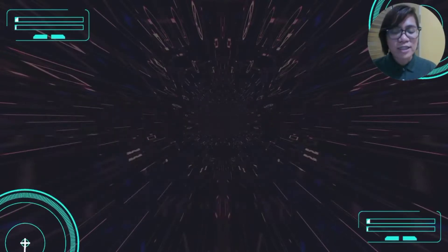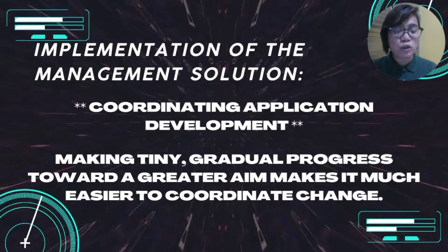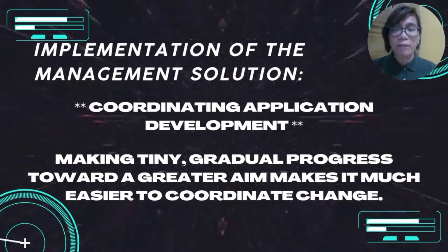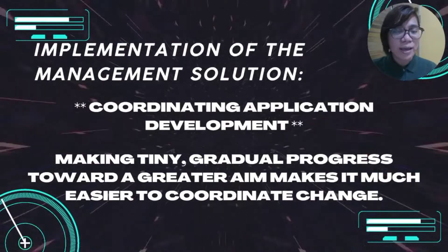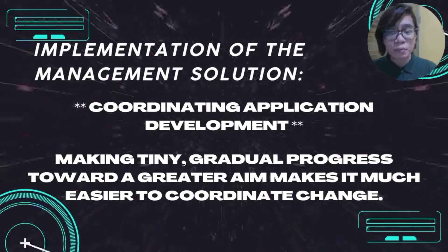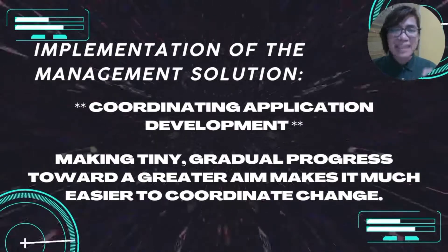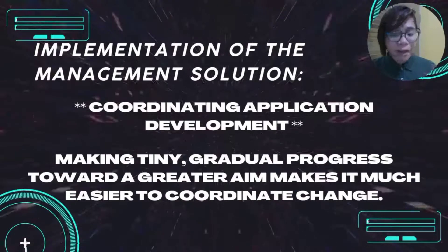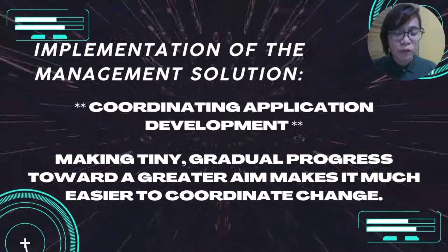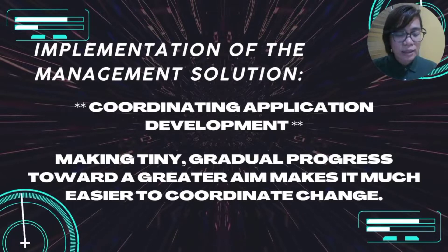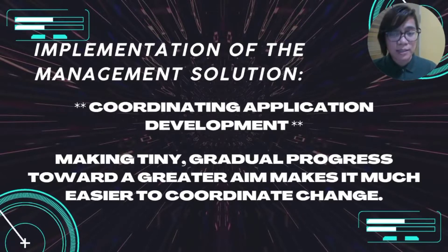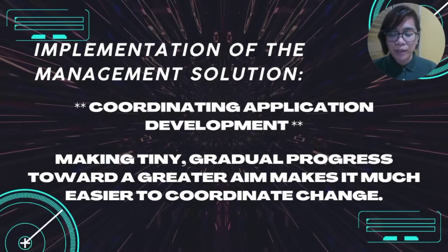The choice of change strategy is crucial for the issue of coordinating application development. Globally, there is too much complexity to try to implement a grand design strategy of transformation. Making tiny, gradual progress toward a great aim makes it much easier to coordinate change. Consider a five-year action plan as opposed to a two-year action plan, and to cut down on coordination expenses, keep the number of information systems to a bare minimum.